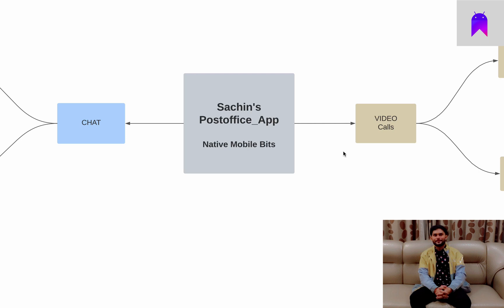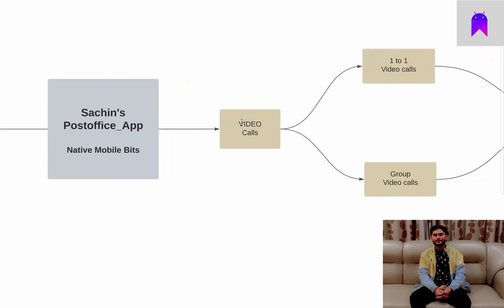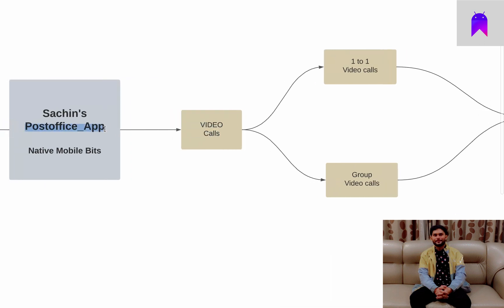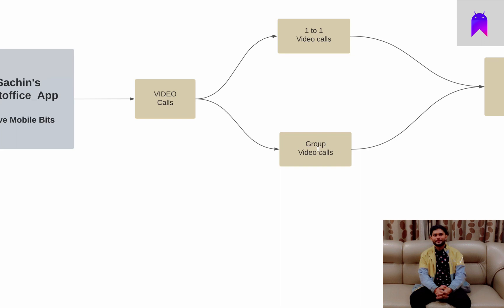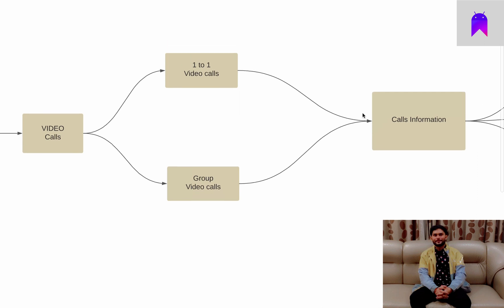We will start step by step, and later on when we add other functions I will share that with you. Let's cover the first primary function: video calls. Inside the Post Office application we are going to implement video calls. Inside our video call function we have two sub-features: one-to-one video call and group video call. Users will be able to make a direct call, and users can also create groups and add friends or family members to initiate a group call.